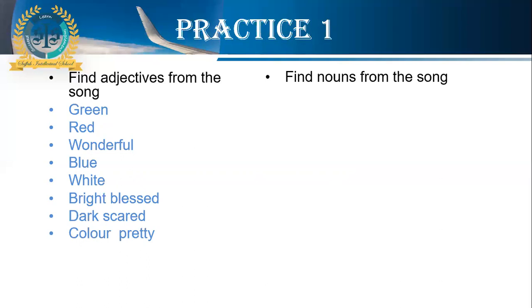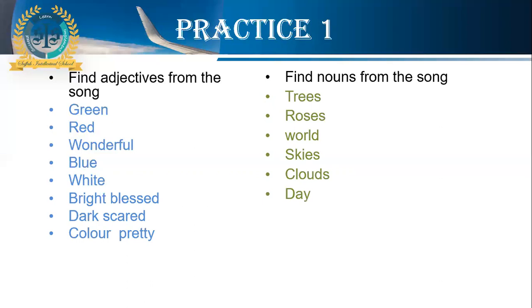I will explain how these adjectives are associated with the nouns used. Green is used for trees, red is used for roses, wonderful is used for world, blue is used for skies, white is used for clouds, bright and blessed are used for day, dark and scared are used for night, and pretty is used for rainbow. So you can see every adjective is associated with a noun. Adjective modifies the noun. Adjective describes the noun. So now you know that with every adjective there must be a noun.